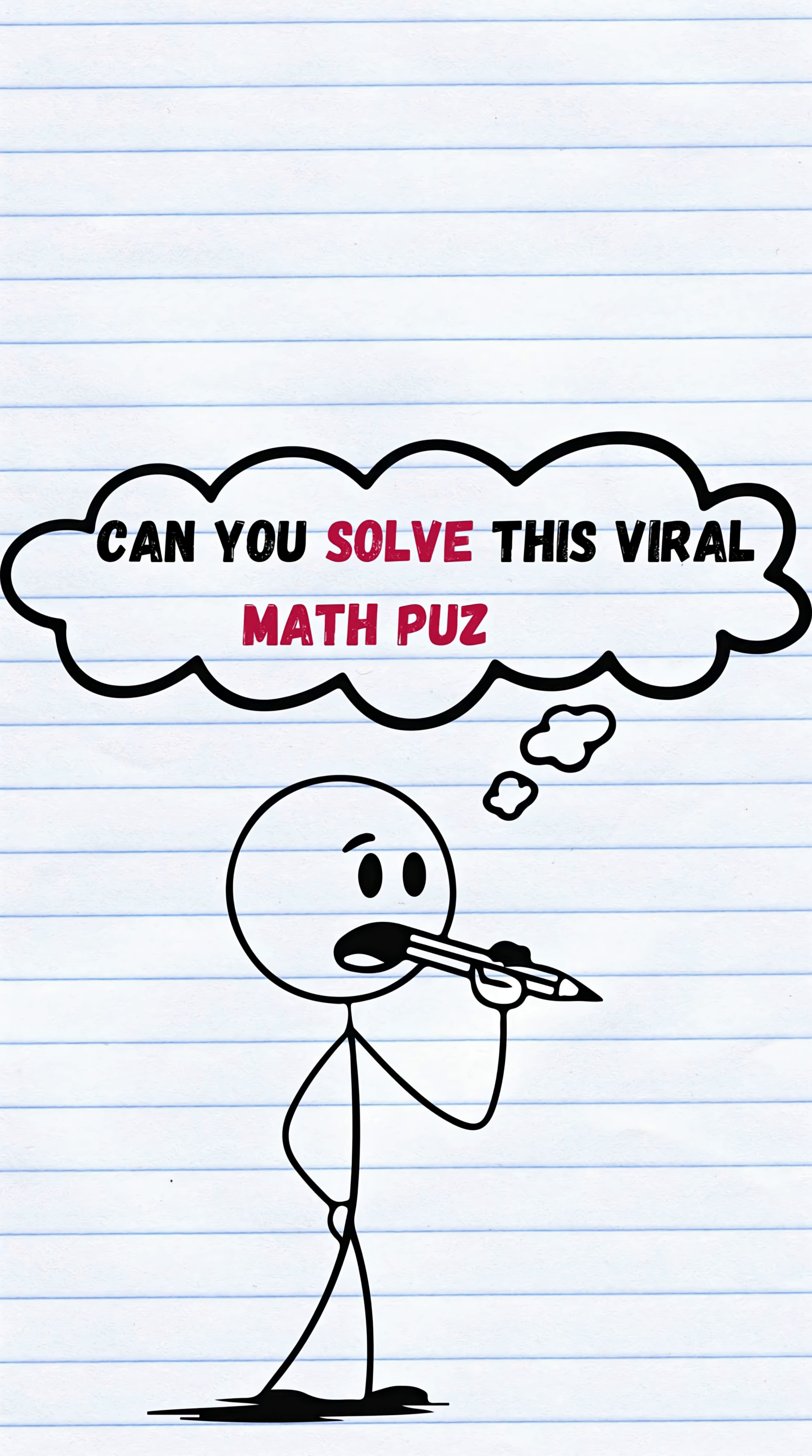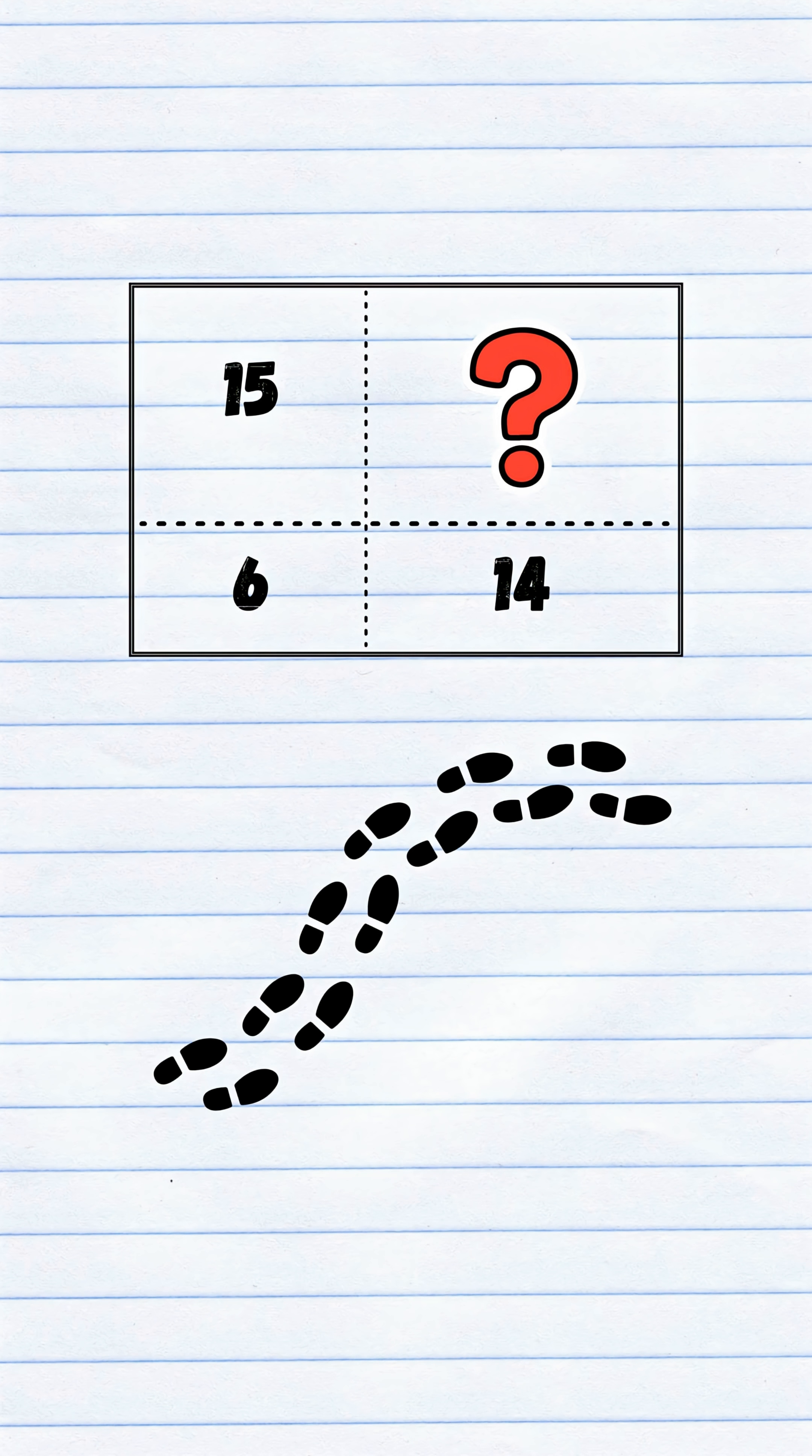Wait, can you solve this viral math puzzle before time runs out? Let's see how fast your brain works. Here's the deal. A big rectangle is sliced into four smaller ones. You get these clues.